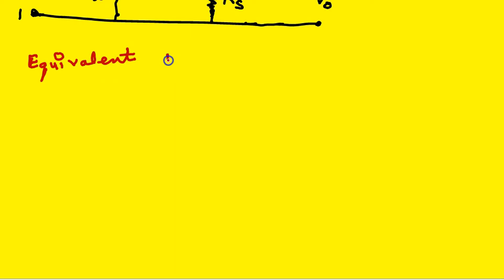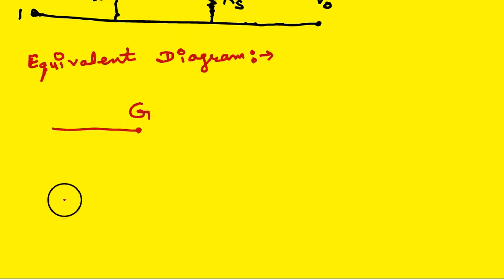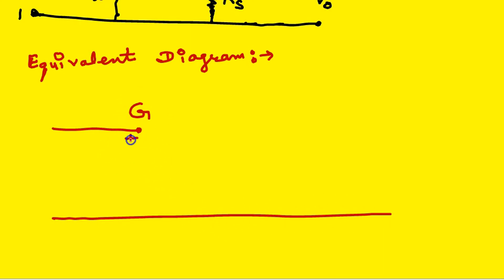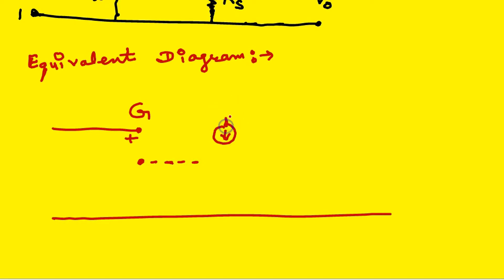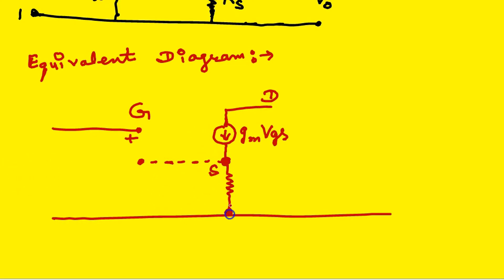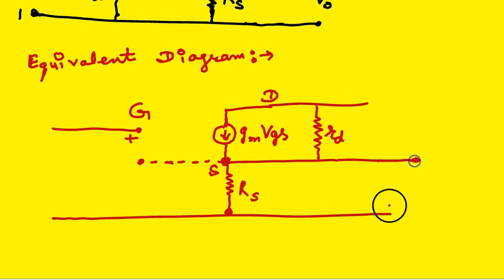The equivalent diagram of the circuit shows the gate terminal. There is a current source GM × VGS, where GM is the mutual conductance. Mutual conductance multiplied by VGS gives the drain current between drain and source. At the source there is RS. Output is taken across RS. There is also a drain resistor RD, which is the internal resistance of the FET at the drain side.